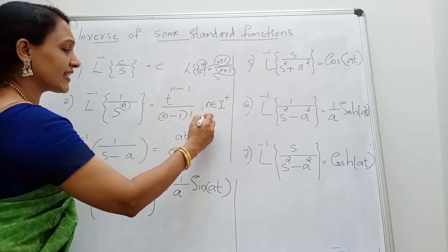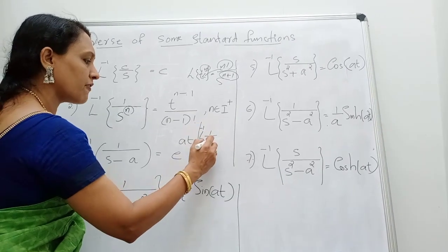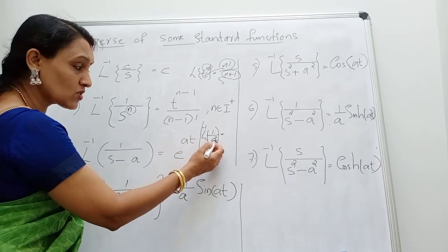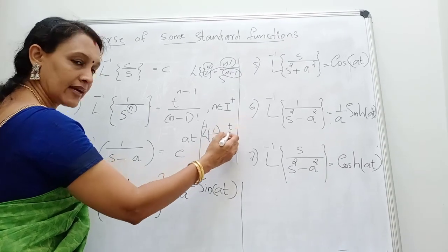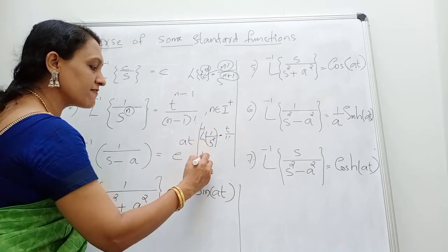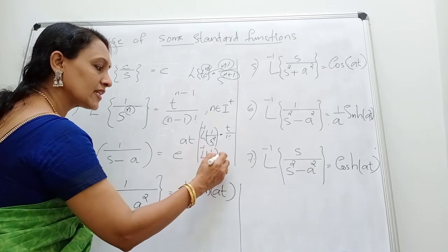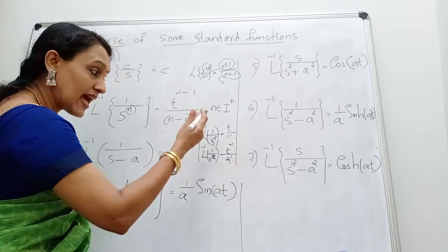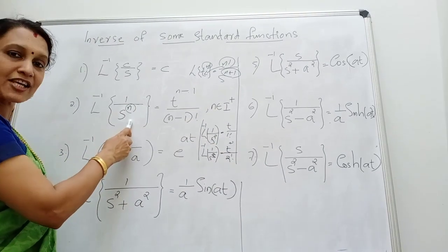Using this result, L inverse of 1/s² equals t raised to 2 minus 1 divided by 1 factorial, which is t. And L inverse of 1/s³ equals t² divided by 2 factorial. So like this, we can evaluate L inverse of 1/s^n.